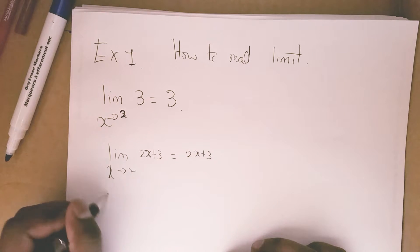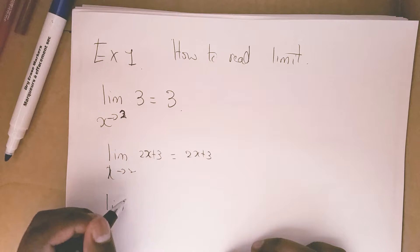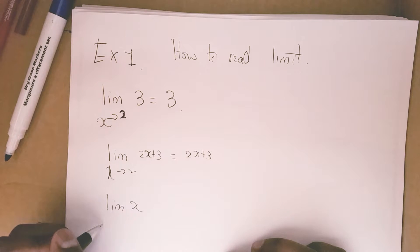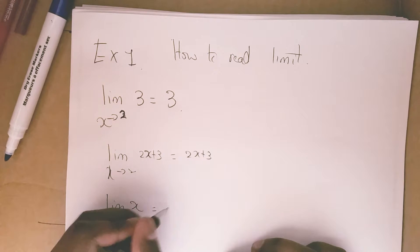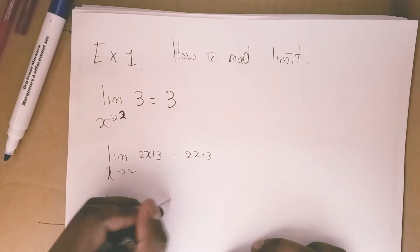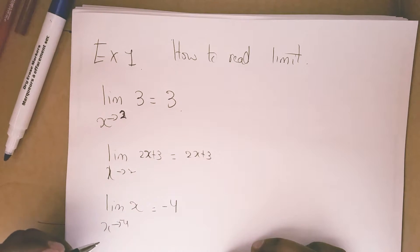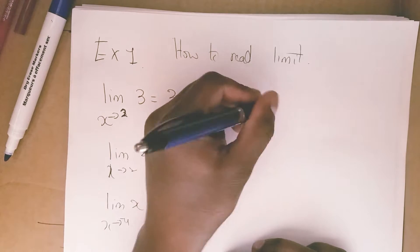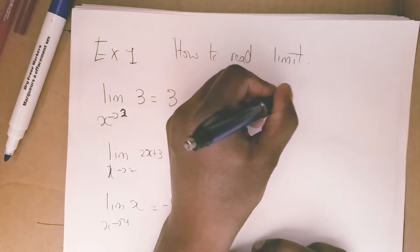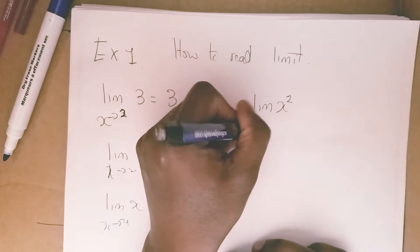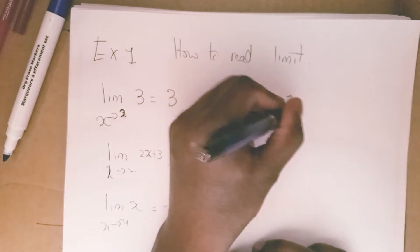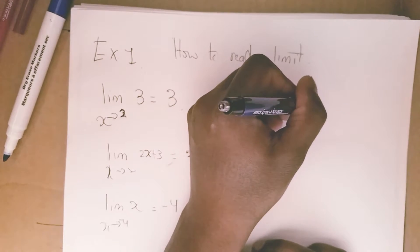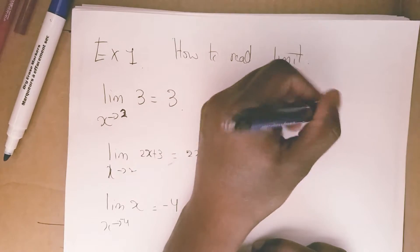For something like the limit of x as x approaches 4, you plug 4 in — it is negative 4, so negative 4 is negative 4. And the limit as x approaches 2 would be 2 squared, which is 4.